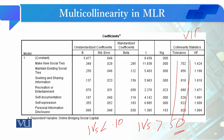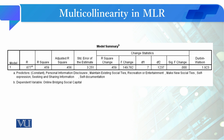Iske saath ek aur value di gayi hai jisko VIF likha hua hai — yeh Variance Inflation Factor hai for each independent variable. Ab iski value bhi dekhein to yeh 1 aur 2 ke darmiyan hai. Theoretically yeh kehte hain ke agar VIF ki value greater than or equal to 10 ho to wahan par collinearity ke chances hain. To is parameter par bhi yeh dekhne ko milta hai ke hamare data mein multicollinearity nahi hai.